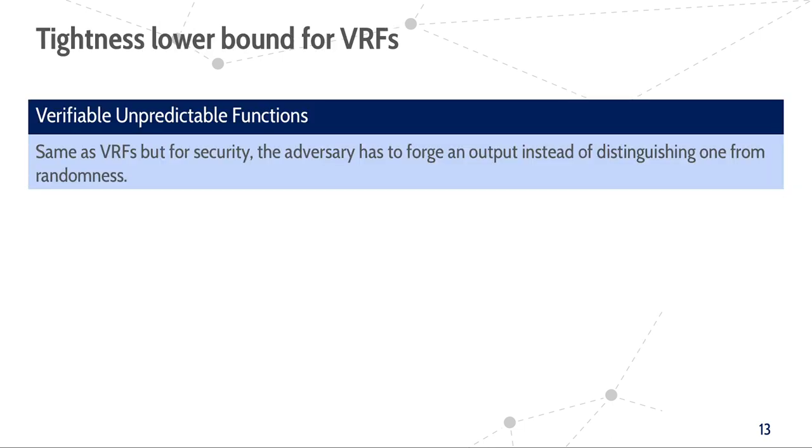The lower bound is indeed slightly more general than just for VRFs, namely it is for Verifiable Unpredictable Functions, or VUFs. These are syntactically identical to VRFs, but for security we require the adversary to forge an output instead of distinguishing one from randomness. Note that this forgery does not contain the proof of correctness, but only the VRF output. Thus, every secure VRF is also a secure VUF, but not the other way around.